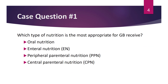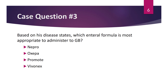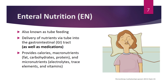Question 1: Which type of nutrition is most appropriate for GB — oral nutrition, enteral nutrition, peripheral parenteral nutrition, or central parenteral nutrition? Question 2: What is the most likely complication of the feeding selected — hypophosphatemia, metabolic bone disease, nausea and vomiting, or liver disease? Question 3: Based on his disease states, which enteral formula is most appropriate — Nepro, Oxepa, Promote, or Vivonex? After discussing enteral nutrition, you should be able to answer each of these questions confidently.